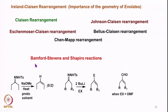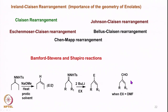Then finally we saw Bamford-Stevens and Shapiro reactions, which also allow C-C bond formation proceeding through a tosylhydrazone intermediate, leading to formation of E or Z olefins depending on the solvent. We also saw how the Shapiro modification using two equivalents of butyllithium and an electrophile allows a vinyl anion to form on the same carbon where the tosylhydrazone was formed. This vinyl anion then allows introduction of an electrophile — for example, DMF as electrophile gives the corresponding vinyl aldehyde.